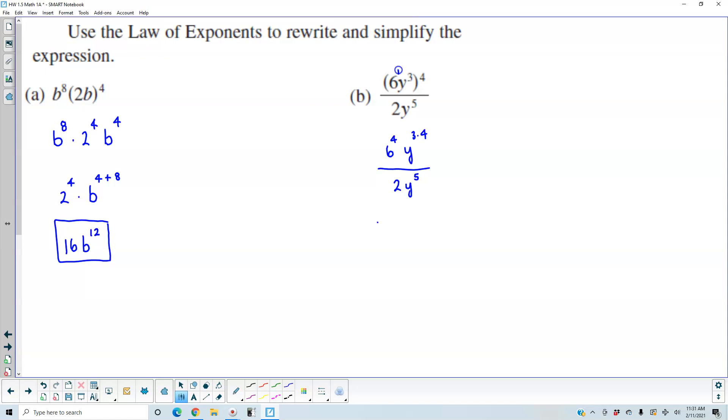Now 6 to the fourth is 1296. That becomes y to the 3 times 4 which is 12 over 2y to the fifth.